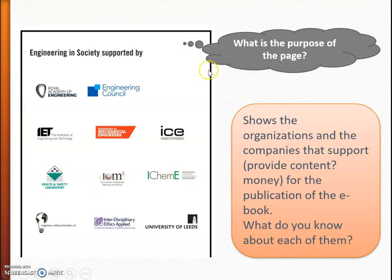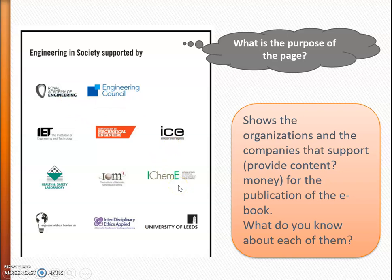Then we go to another page and we see Engineering in Society supported by, and here we have a list of all kinds of organizations. The key question we have to ask ourselves is, why are they supporting this? We see academic, but we also see commercial — they've given the money for this publication. What are they getting out of it? So even though there may not be a lot we can do with it, it's something we have to pay attention to and ask ourselves: what do we know about them? What are their purposes? Here I can generally say, aha, it's a mix of academic and commercial — so they're working together for some reason or another.